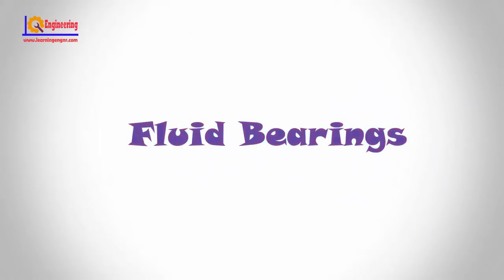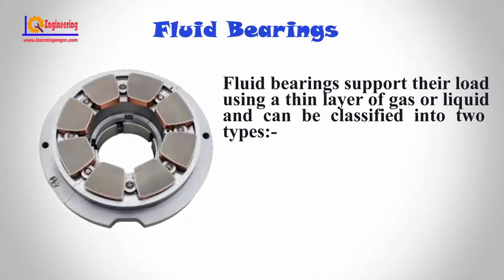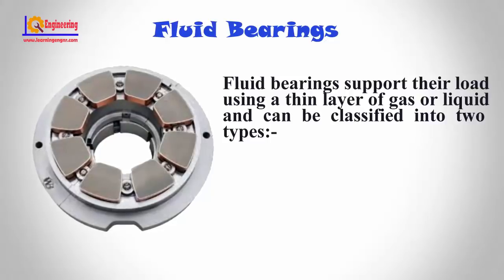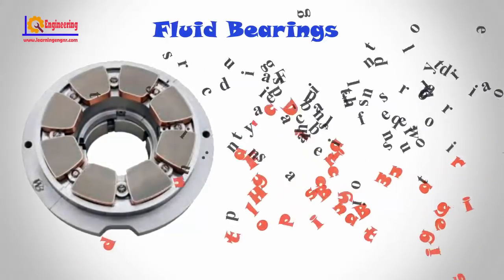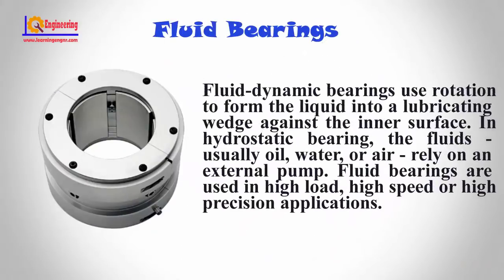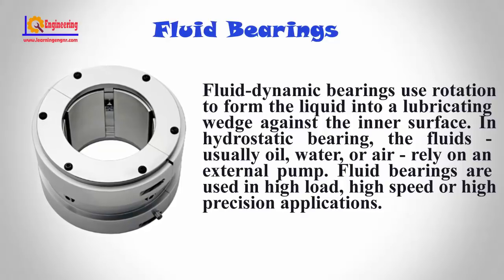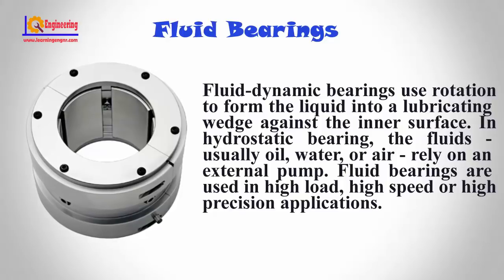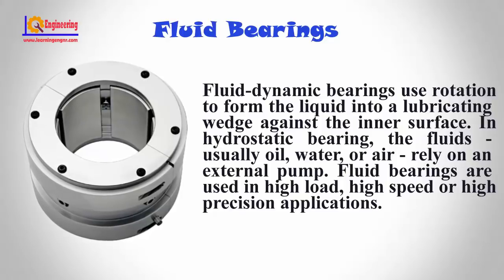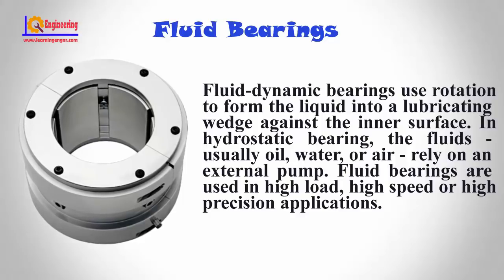Fluid Bearings. Fluid bearings support their load using a thin layer of gas or liquid and can be classified into two types. Fluid dynamic bearings use rotation to form the liquid into a lubrication wedge against the inner surface. In hydrostatic bearings, the fluid, usually water or air, relies on an external pump. Fluid bearings are used in high load, high speed, and high precision applications.